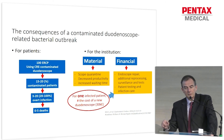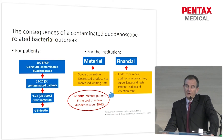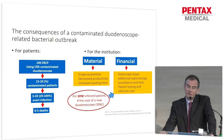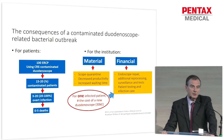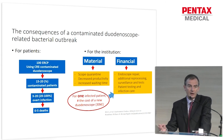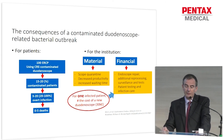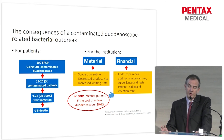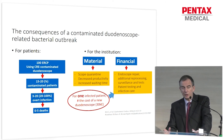Looking more closely at the consequences of a contaminated duodenoscope-related bacterial outbreak, these consequences are twofold — for patients and for the institution. If you take 100 ERCPs using a multidrug-resistant contaminated duodenoscope, approximately 15% to 20% of patients will be contaminated. Out of these, 20 to 100% — or 3 to 20 patients out of 100 — will develop overt infection, and this will result in 0 to 5 deaths depending on the reports. For the institution, consequences are both material: the need for endoscope quarantine, decreased productivity, and increased waiting time for patients.